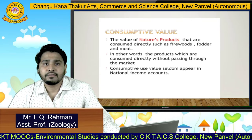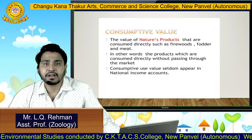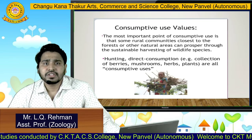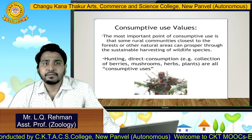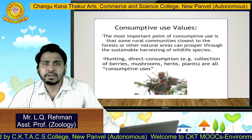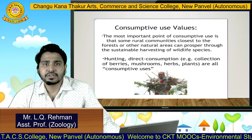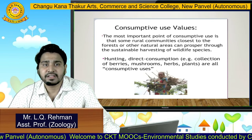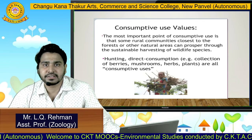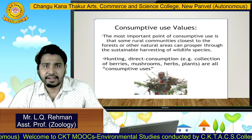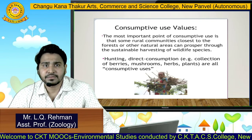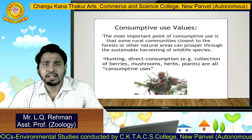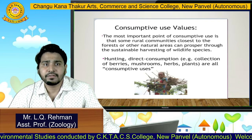Consumptive use values seldom appear in national income accounts. The most important point of consumptive use is that some rural communities which are closest to the forest or natural areas can prosper through the sustainable harvesting of wildlife species. Examples include hunting as a direct consumption, and collection of berries, mushrooms, herbs, and plants. These are all consumptive uses.